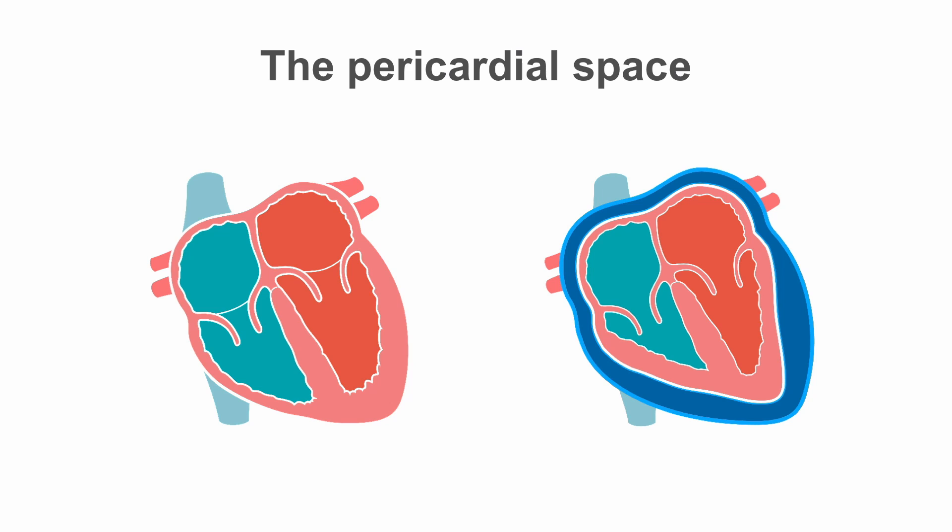The pericardium is a sac around the heart with two layers. There's always a small amount of fluid between the two layers allowing them to move with respect to each other, but if additional fluid collects it's referred to as a pericardial effusion. The additional fluid causes intrapericardial pressure to increase, which opposes the pressures within the heart and can affect its performance. The most life-threatening of these is cardiac tamponade, which could be fatal if not recognised and managed quickly enough.